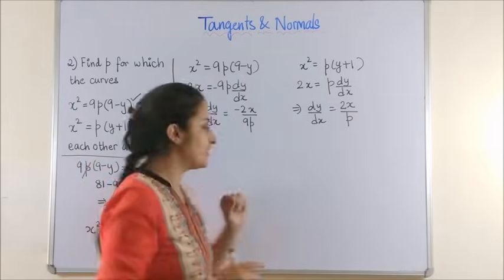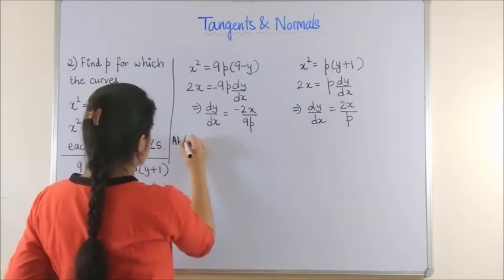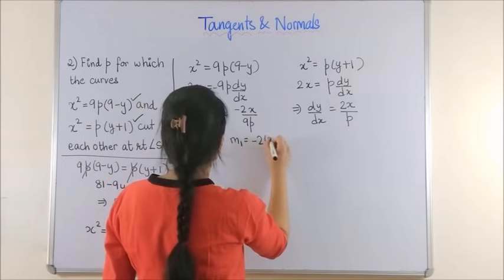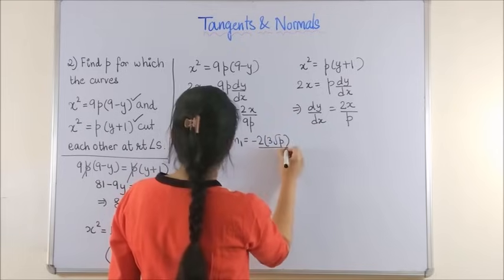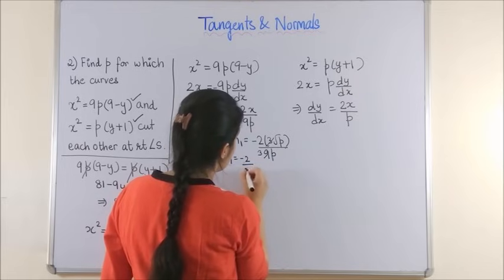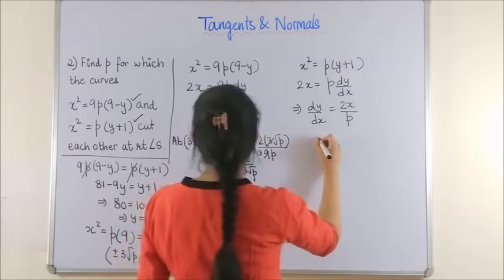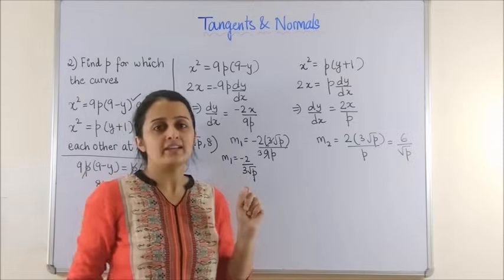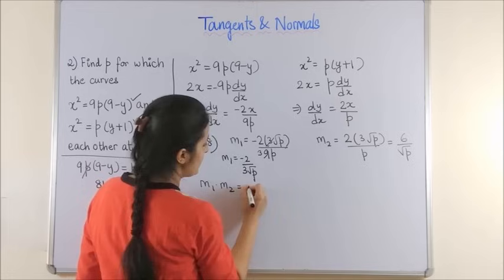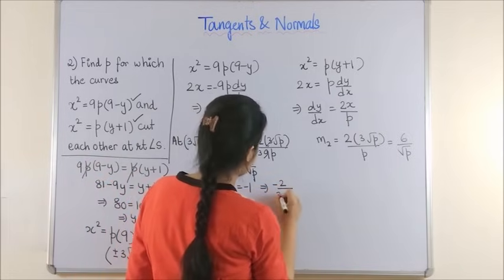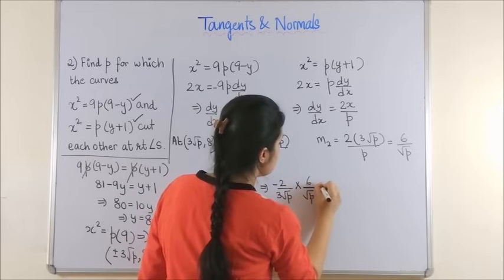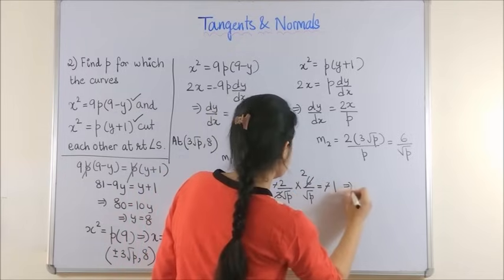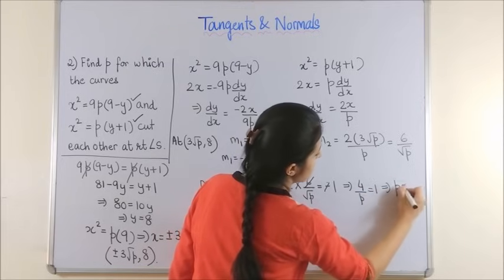At the point (3√p, 8): m₁ = −2·(3√p)/(9p) = −2/(3√p), and m₂ = 2·(3√p)/p = 6/√p. Using the orthogonality condition m₁ · m₂ = −1: (−2/(3√p)) · (6/√p) = −1, which simplifies to 4/p = 1, giving p = 4.